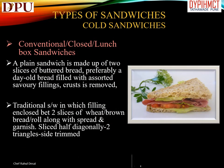Types of sandwiches — cold sandwiches: conventional closed or lunch box sandwiches. A plain sandwich is made up of two slices of buttered bread, preferably day-old bread, filled with assorted savory fillings; crusts are removed. The traditional format uses two slices of wheat or brown bread along with spread and garnish, sliced diagonally into two triangles with sides trimmed.